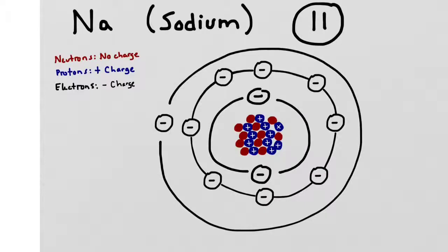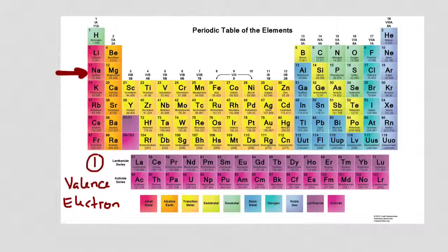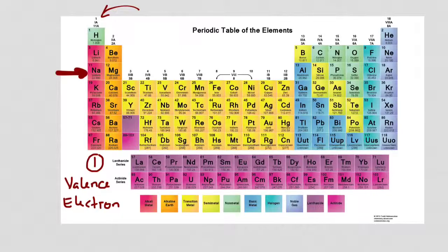Let's go back to our periodic table. Sodium had one electron in the outermost shell — we call this a valence electron. Everything else in this column also has one valence electron: hydrogen, lithium, sodium, potassium, all the way down that column all have one valence electron.